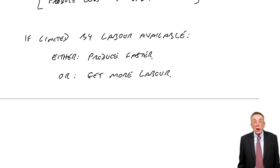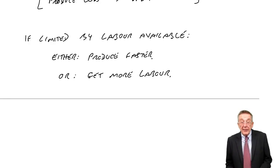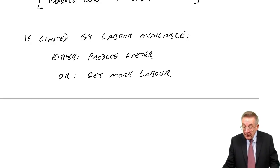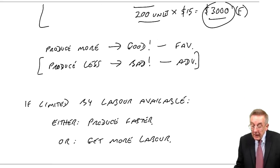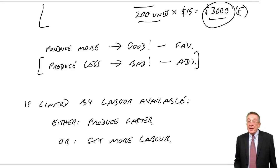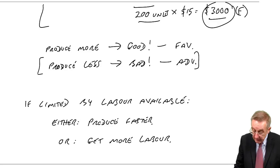There are only two ways. Either you produce faster, because if the workers work faster, then even with the same amount of labour, they can produce more units. Or you get more labour. Because, of course, if you manage to get more labour, then we can produce more units.